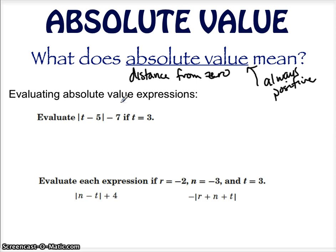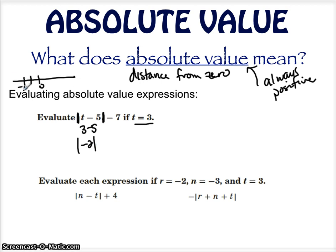When evaluating absolute value expressions, all we do is plug in. These are the symbols for absolute value — the two lines — in case you haven't seen them before. That means you're going to take the absolute value of t minus 5. So if t equals 3, then 3 minus 5 is negative 2. Negative 2 is 2 units away from zero on a number line, so the absolute value of negative 2 is 2. Then we have minus 7, which gives negative 5. So that's our answer.